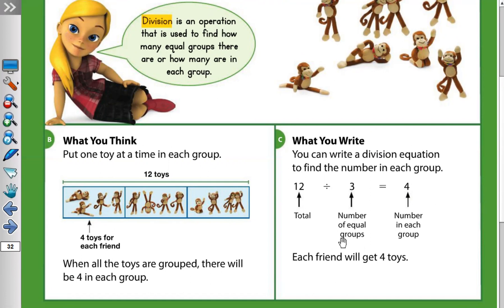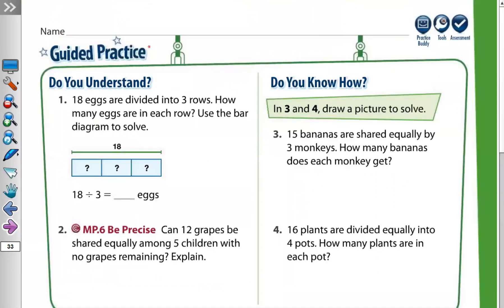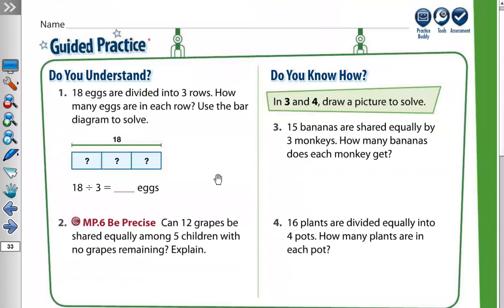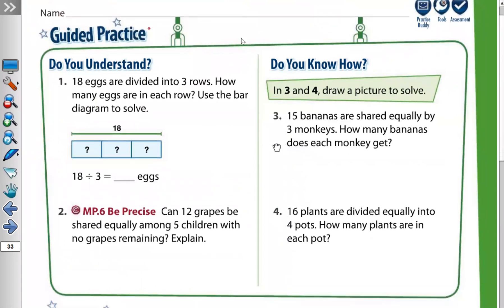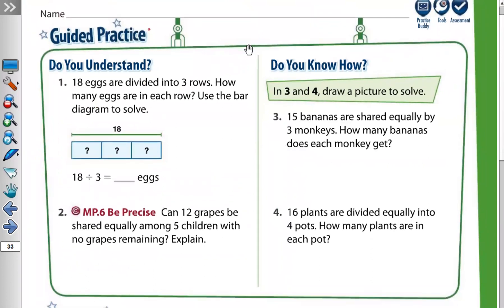Equal to how much in each group? Four toys per group. So each friend will get four toys. Now let's move to the next page, question number three. In questions three and four, draw pictures to solve.